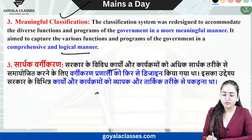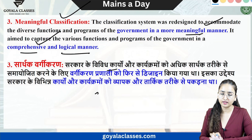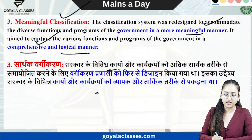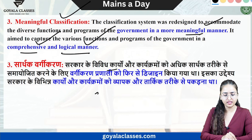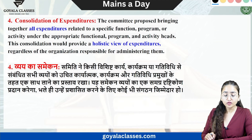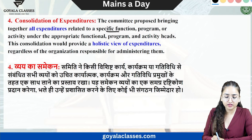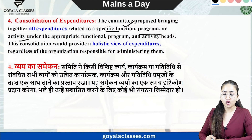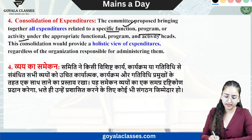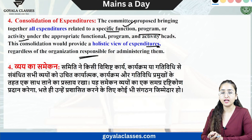The classification needs to be meaningful, logical, and applicable to every place. It should be comprehensive and applicable to every department on a functional basis. Furthermore, the classification of expenditure — including capital expenditure — should be linked to specific functions, programs, and activities to provide a holistic view of overall expenditure, regardless of which organizational unit is administering them. It should not be an organizational basis but a holistic basis.